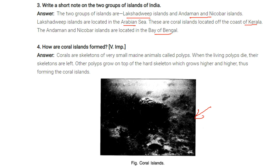How are coral islands formed? Corals are the skeletons of very small animals called polyps. When living polyps die, their skeletons remain and other polyps grow on top of these hard skeletons, which grow higher and higher, eventually forming a coral island.